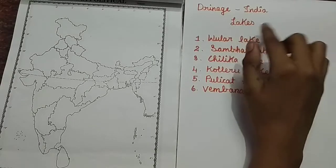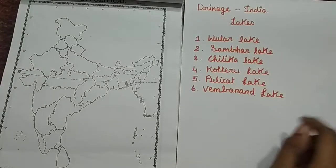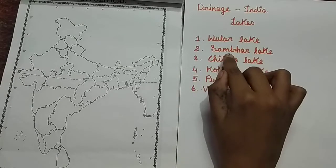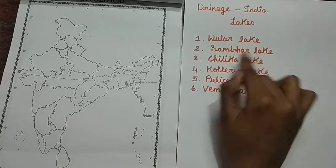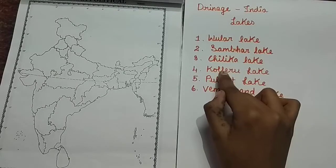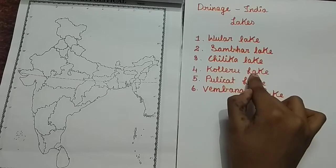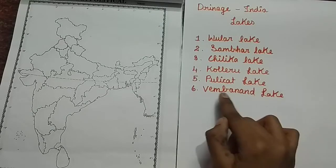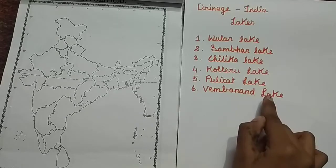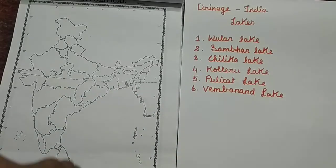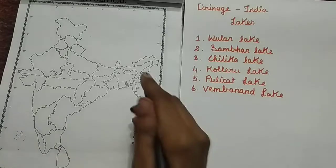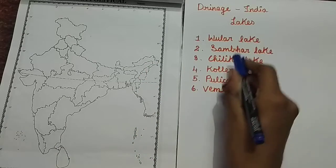In this video on drainage of India, we are going to locate the following lakes: Ullar Lake, Sambar Lake, Chilika Lake, Koleru Lake, and Pulikat Lake.